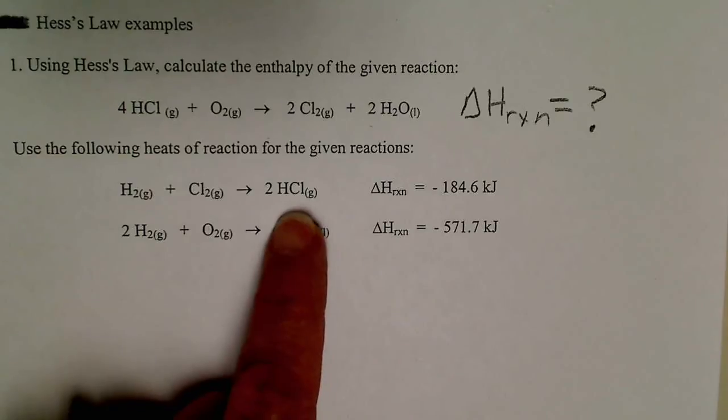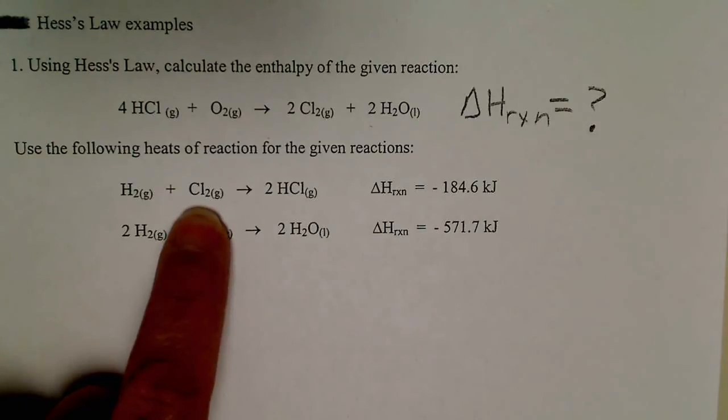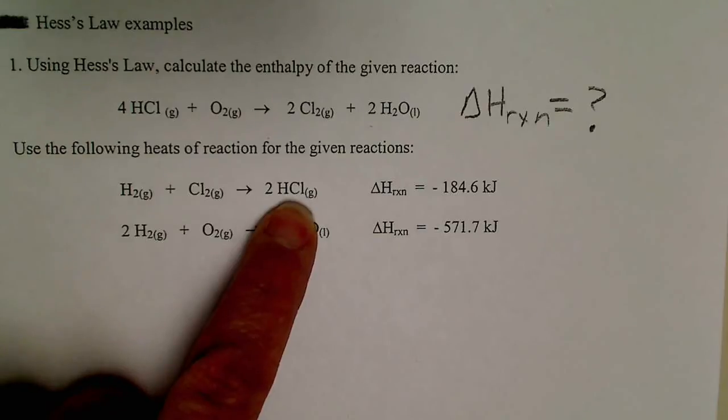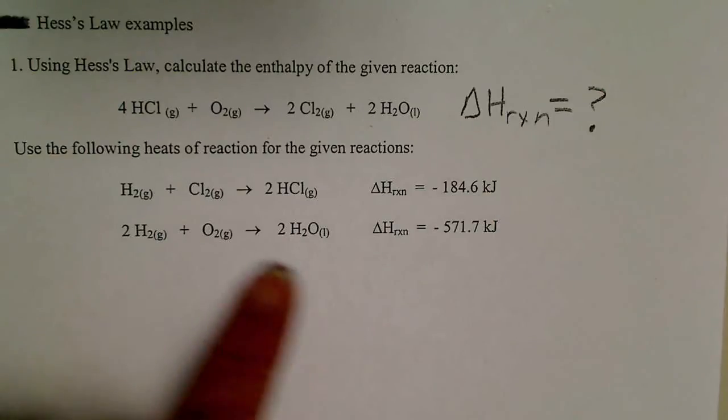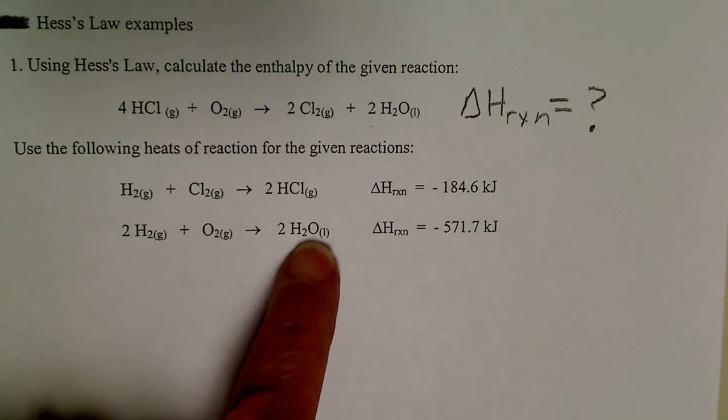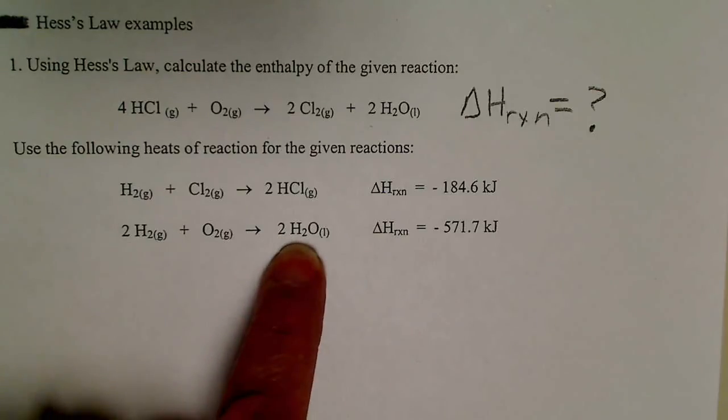So if we looked in the back of the book for the formation of HCl gas, since that's an element and that's an element, those heats of formation will be zero and one mole of HCl gas would end up being half this number. And since this is also the formation of a compound from the elements, if I were to cut this reaction in half, this value cut in half would be the heat of formation of one mole of liquid water from its elements.